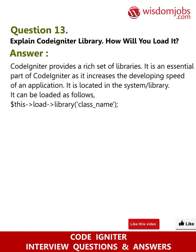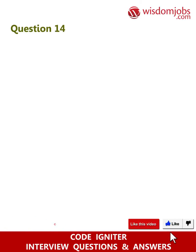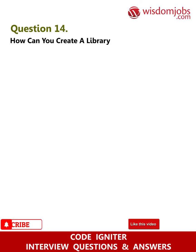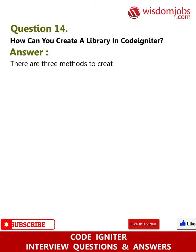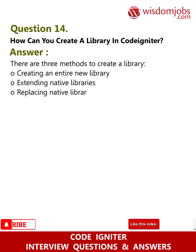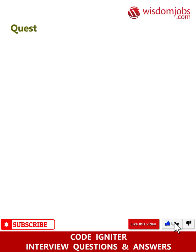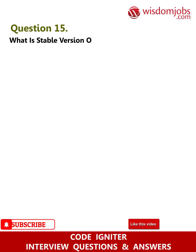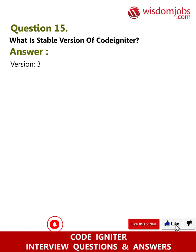Question 14: How can you create a library in CodeIgniter? Answer: There are three methods — creating an entirely new library, extending native libraries, or replacing native libraries. Question 15: What is the stable version of CodeIgniter? Answer: Version 3.0.5, dated January 13th, 2016.